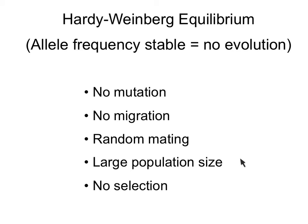The population also has to be large, because random events can have big effects in a small population. For example, an earthquake or avalanche that wipes out part of the population could cause some alleles to disappear — not because they were disadvantageous, but simply due to random events. Finally, for allele frequencies to be stable, you need no selection, so that no allele is favored over any other.